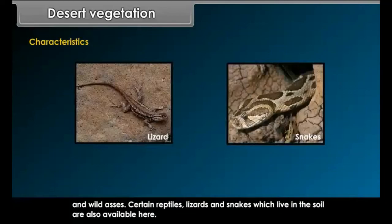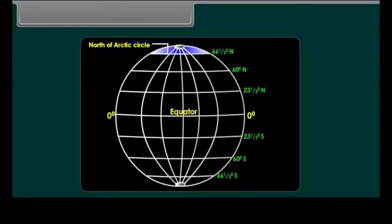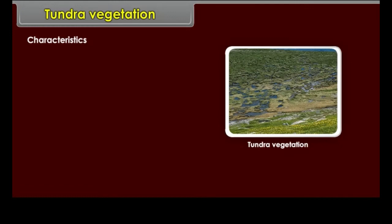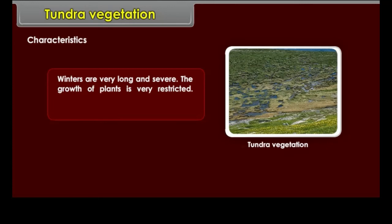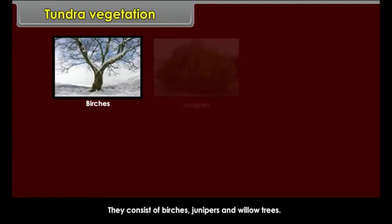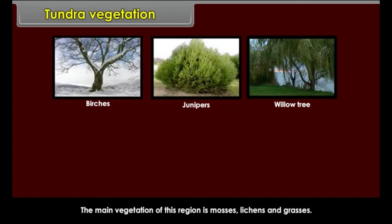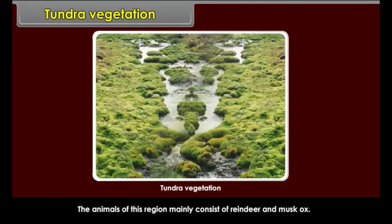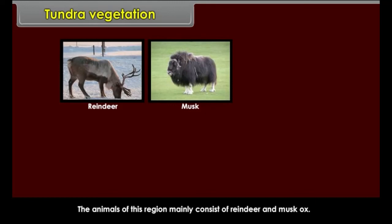Tundra vegetation is found to the north of the Arctic Circle. Characteristics: Winters are very long and severe. The growth of plants is very restricted. Short, stunted plants and trees grow adjoining the taiga forests, consisting of birches, junipers and willow trees. The main vegetation of this region is mosses, lichens and grasses. Summers are short and certain flower-bearing plants also grow. The animals mainly consist of reindeer and musk ox. Other common animals are polar bear, sable, blue fox, lemmings and arctic hare.